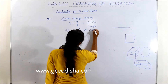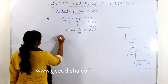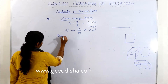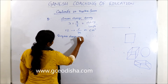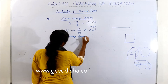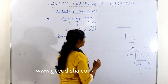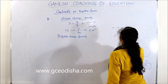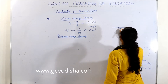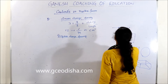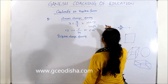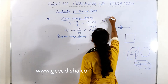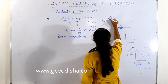For surface charge density, we use a small line element dl. For a small charge dq, we can represent lambda equal to dq by dl. Therefore, dq is equal to lambda times dl.